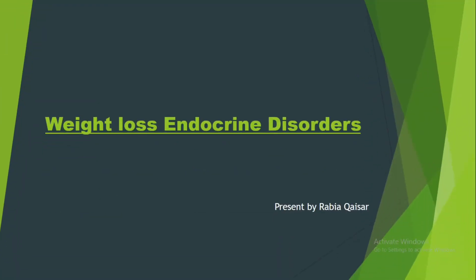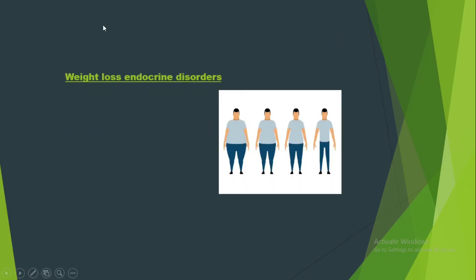Assalamu alaikum. Today my topic of discussion is weight loss endocrine disorders. I will discuss those disorders which show weight loss symptoms as well as their reasons — why weight loss occurs in these disorders. The names of weight loss endocrine disorders are: hyperthyroidism, diabetes mellitus, and adrenal insufficiency.